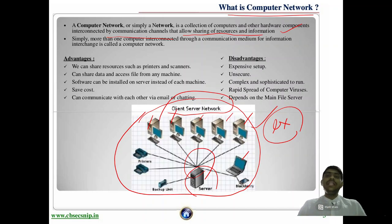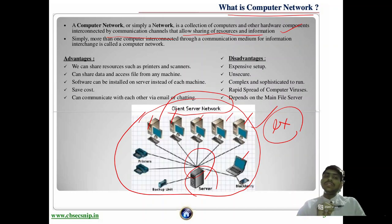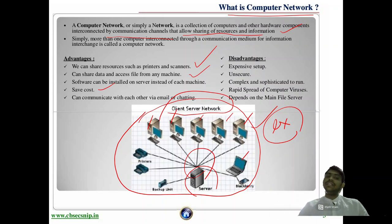Why do we need this network? The advantages we get: first, we can share our resources — files, data, printer devices, hardware, and software — with each other. However many computers are connected to the network, say 10 computers, you can share data among all of them. You can share resources like printers and scanners, access files from any machine, install software on a server instead of each machine, and communicate via email or chat.